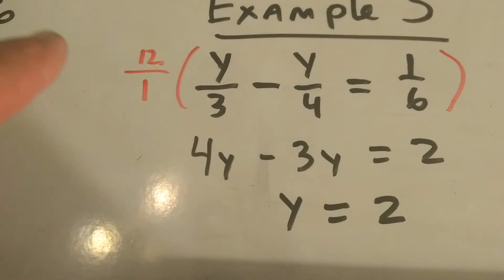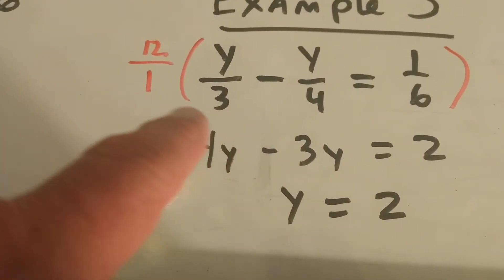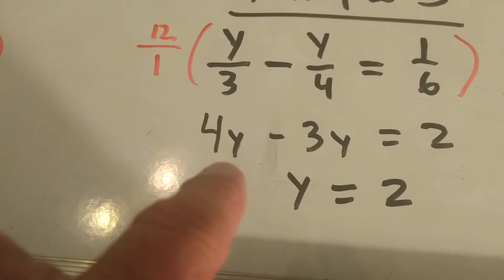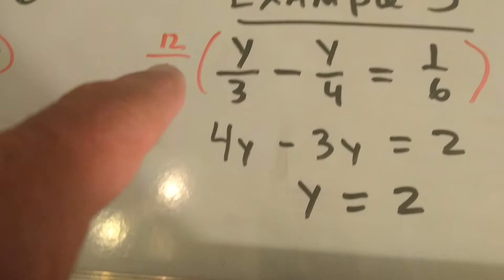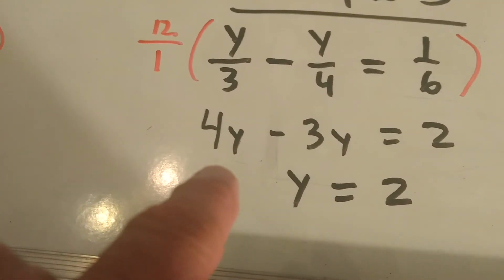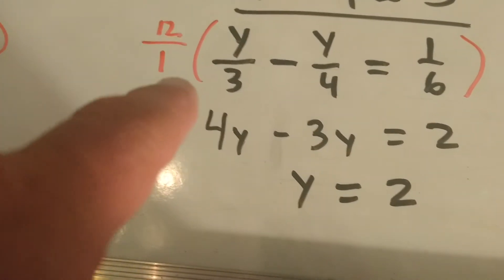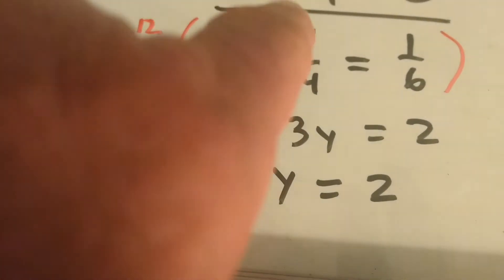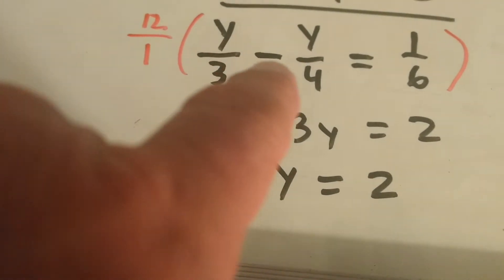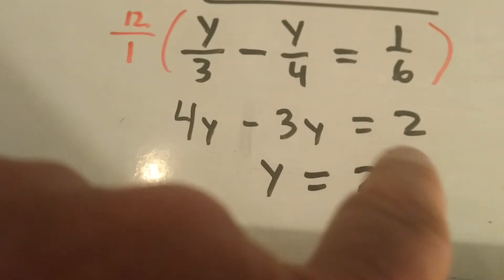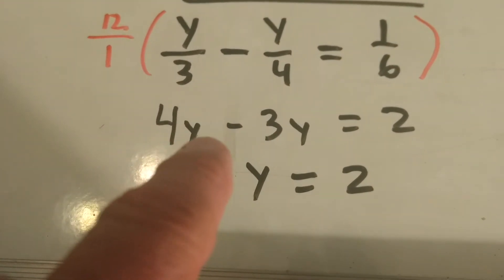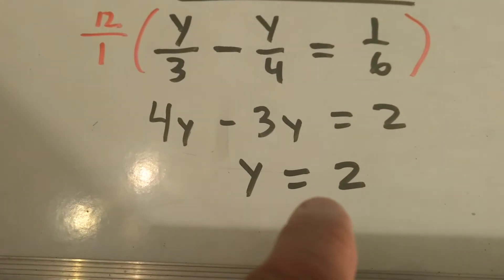So what I'm going to do is multiply by 12 over 1 times y over 3, which gives me 12y over 3. 12y over 3 gives me 4y. Or another way to look at it, divide 12 by 3, you get 4. 4 times y is 4y. Take 12 over 1 and multiply by this minus y over 4. We get 12y over 4, which gives us minus 3y. Take 12 over 1, multiply times 1 over 6. We get 12 over 6, which gives us 2. Then we collect like terms. 4y minus 3y is y. y equals 2.